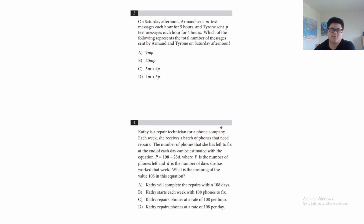Questions 3 and 4 are wordy problems that don't require much calculation. For question 3, Armand sends M text messages per hour for five hours, so 5M is the total number of messages Armand sent. Tyrone sends P text messages per hour for four hours, so 4P. The answer is C.